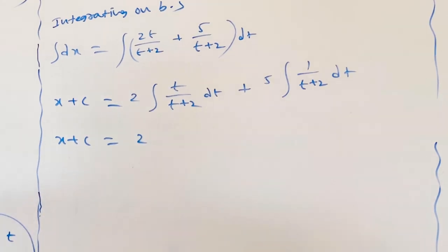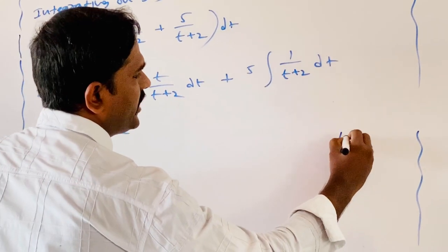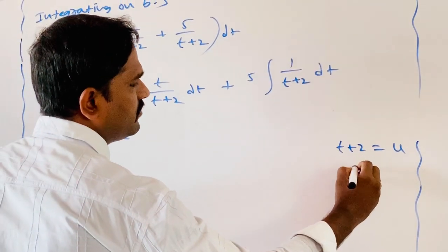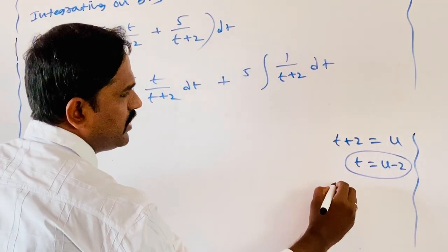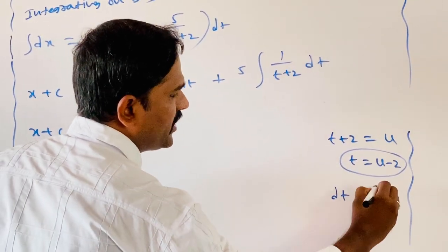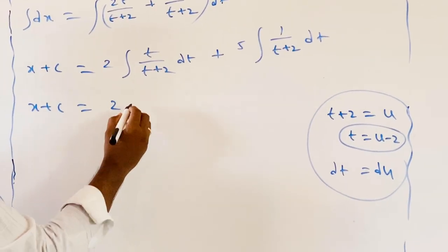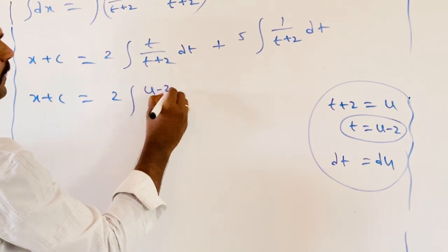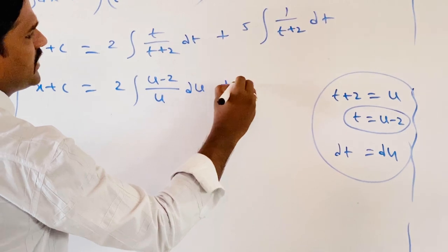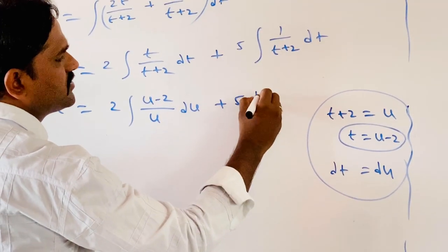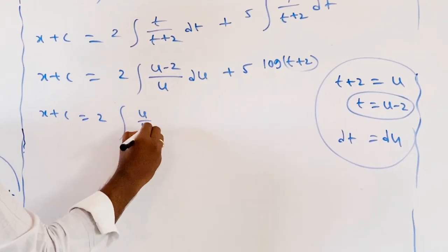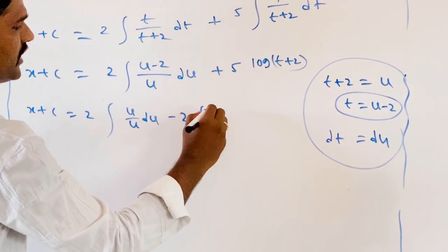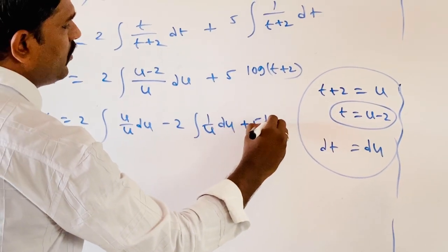For the integral of t / (t + 2), we use the substitution t + 2 = u, so t = u − 2 and dt = du. Substituting: ∫(u − 2) / u · du = ∫(1 − 2/u) du. Breaking into parts: 2∫(u/u) du − 2∫(1/u) du + 5 log(t + 2). This gives 2u − 2 log u + 5 log(t + 2).